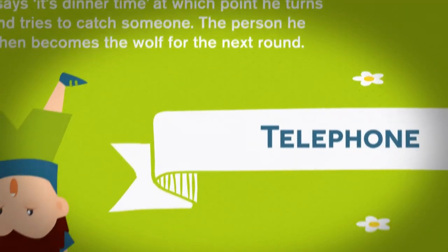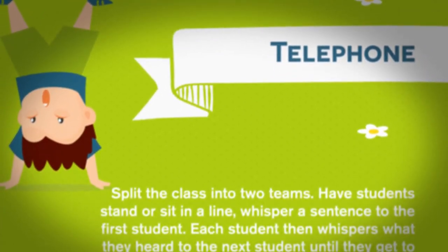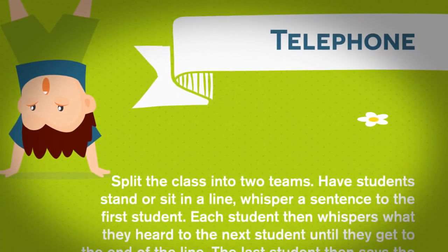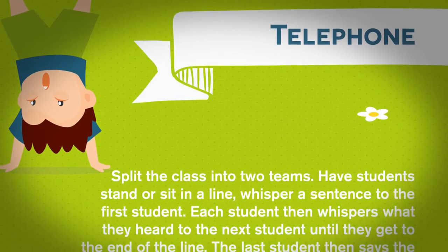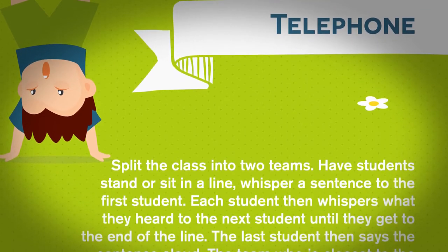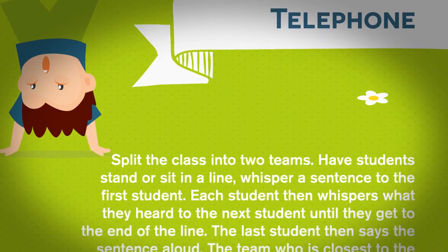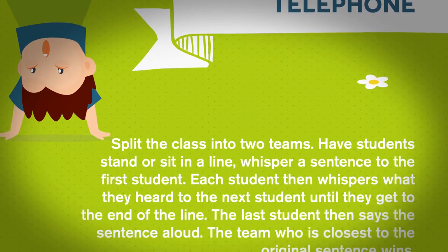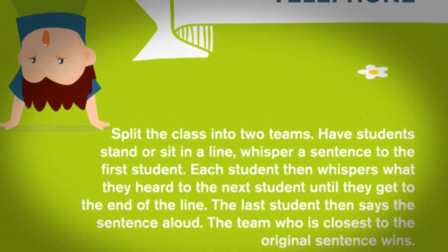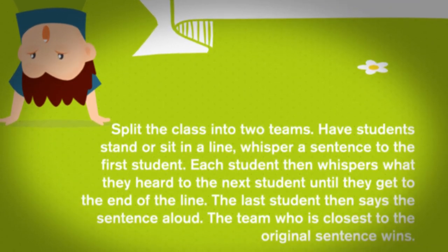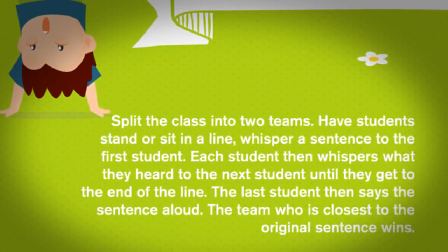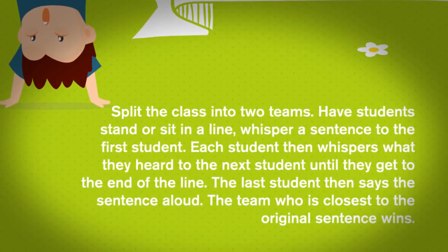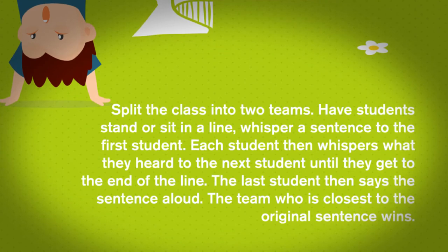Telephone. Split the class into two teams. Have students stand or sit in a line and whisper a sentence to the first student. Each student then whispers what they heard to the next student until they get to the end of the line. The last student then says the sentence aloud. The team who is closest to the original sentence wins.